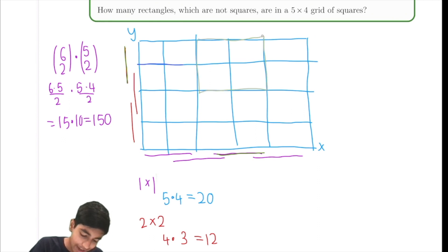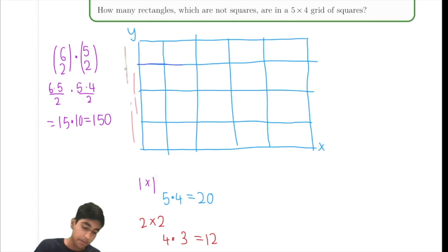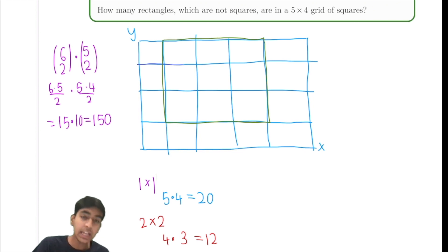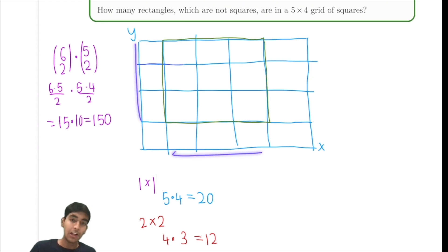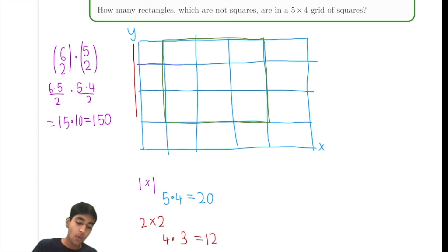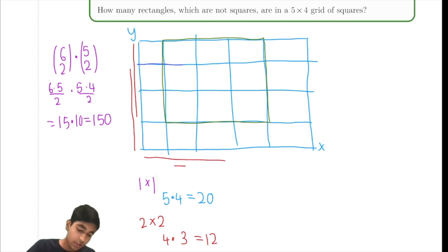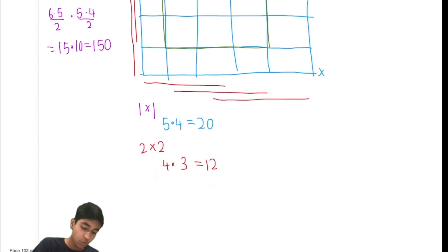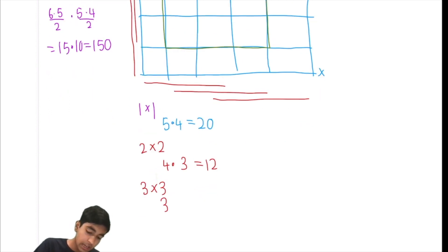For three by three, we take a very similar approach. Every single three by three square will span out three units on the y-axis and three on the x-axis. On the y-axis, it can span the first three or the last three — two possibilities. On the x-axis, it can span the first three, the second three, or the last three — three possibilities. So for three by three, we've got three times two equals six.